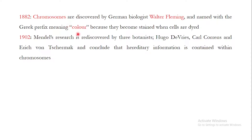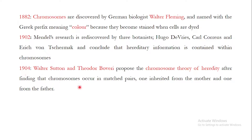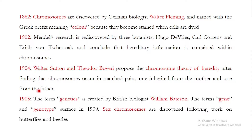In 1904, Walter Sutton and Theodore Boveri proposed the chromosome theory of heredity after finding that chromosomes occur in matched pairs, one inherited from the mother and one from the father. In 1905, the term genetics was coined by British biologist William Bateson, and the terms gene and genotype surfaced in 1909. Sex chromosomes were discovered following work on butterflies and beetles, the work of Thomas Hunt Morgan.